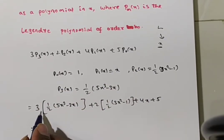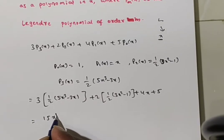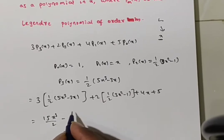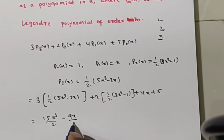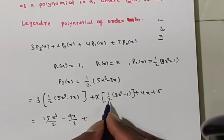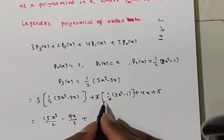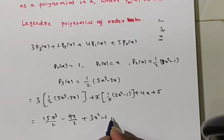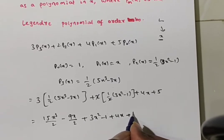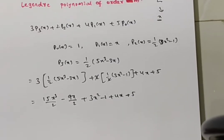So this is equivalent to, now you multiply. Then you will have 3 times 5, 15x³/2 minus 9x/2, plus this denominator 2 and numerator 2 getting cancelled. Then you will have 3x² - 1 + 4x + 5.